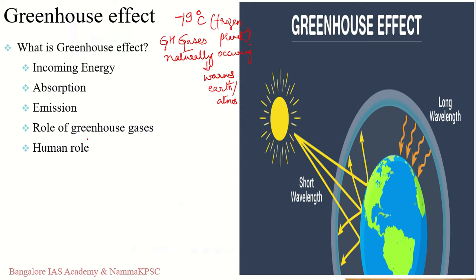The greenhouse effect itself is beneficial for life on earth. However, the problem arises when humans interfere in this natural process. Human-generated greenhouse gas emissions upset the natural balance and lead to increased warmth. The earth has a natural heat budget, and when extra greenhouse gases emitted due to human activities change this budget, it becomes a problem. The greenhouse effect becomes problematic when more and more greenhouse gases are emitted into the atmosphere by human activities.